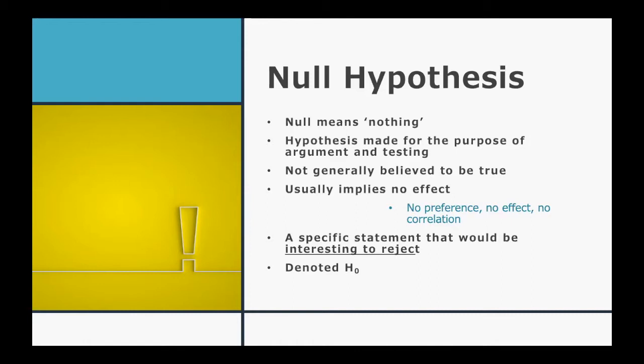Now in statistical hypotheses we have one of two options: a null hypothesis and an alternate hypothesis, and these two go together all the time. Null simply means nothing. This is a hypothesis that's made simply for the purpose of argument and for testing, but it's generally not believed to be true. Usually null hypotheses imply no effect — they typically state no preference, no effect, no correlation, no relationship. Null hypotheses represent a specific statement that we would actually be interested in rejecting. Usually the more interesting scenario is when the null hypothesis is rejected. The way that we denote a null hypothesis is with the notation H-naught, or H sub zero.